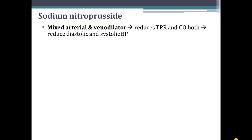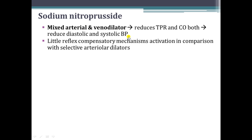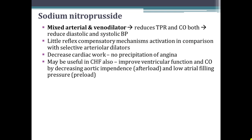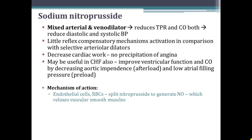The next drug is sodium nitroprusside. It is a mixed arterial and venodilator drug. It reduces total peripheral resistance and cardiac output both, and reduces both diastolic and systolic blood pressure. It produces little reflex compensatory mechanism activation compared to selective arterial dilators, decreases cardiac work, and does not precipitate angina pectoris. It may also be useful in CHF by improving ventricular function and cardiac output by decreasing aortic impedance (afterload) and lowering arterial filling pressure (preload). The mechanism of action involves endothelial cells and red blood cells taking up sodium nitroprusside and splitting it to generate nitric oxide, which is an endothelium-derived relaxing factor that relaxes vascular smooth muscles and produces vasodilatation.